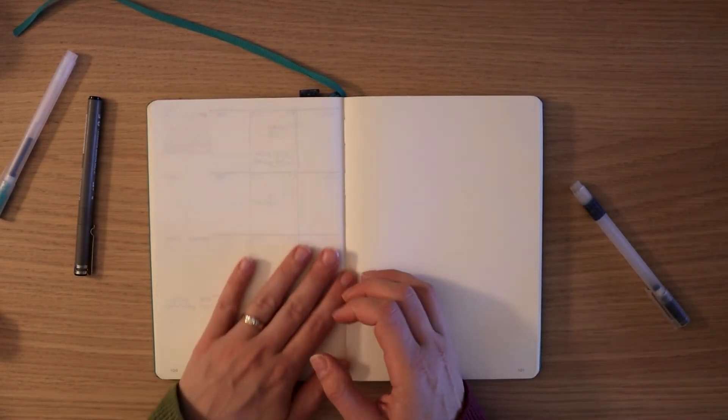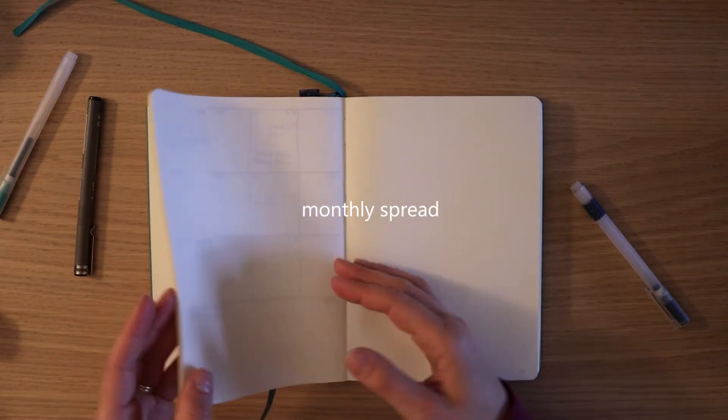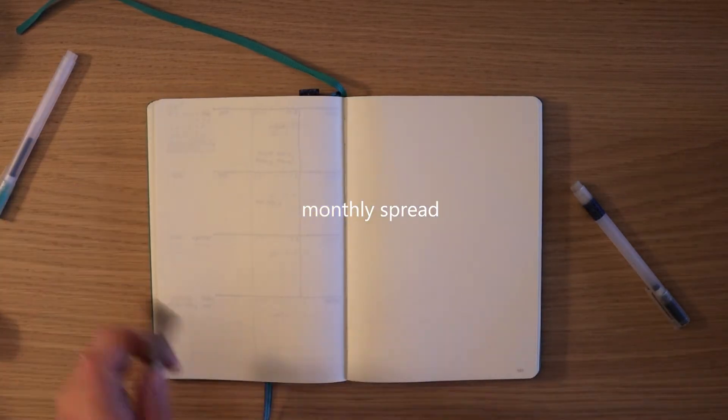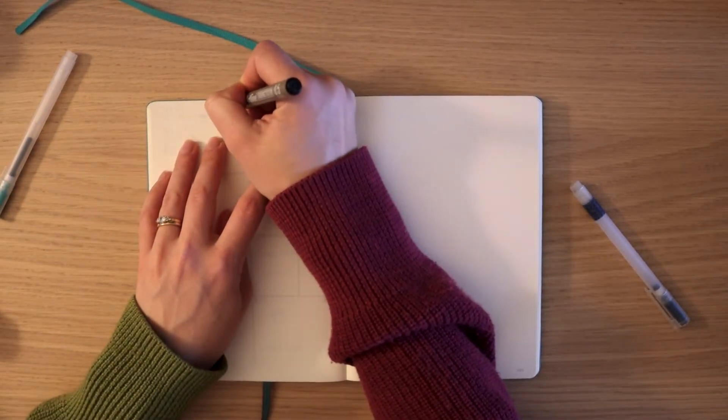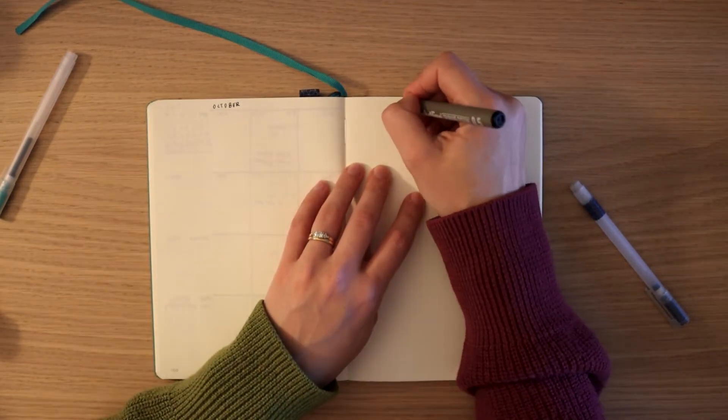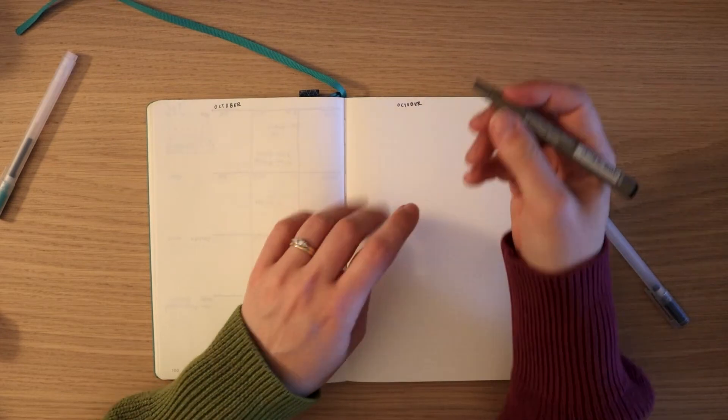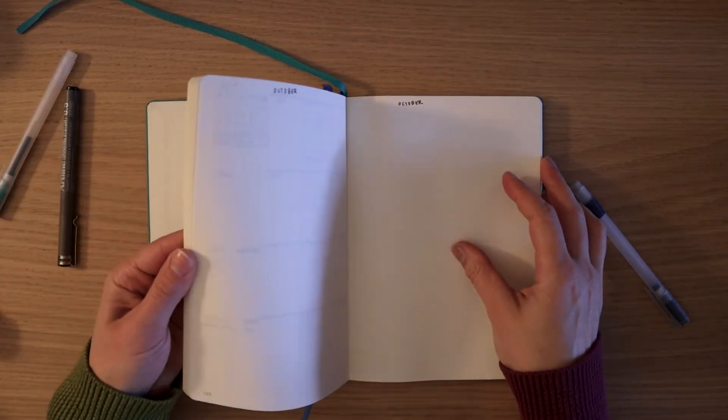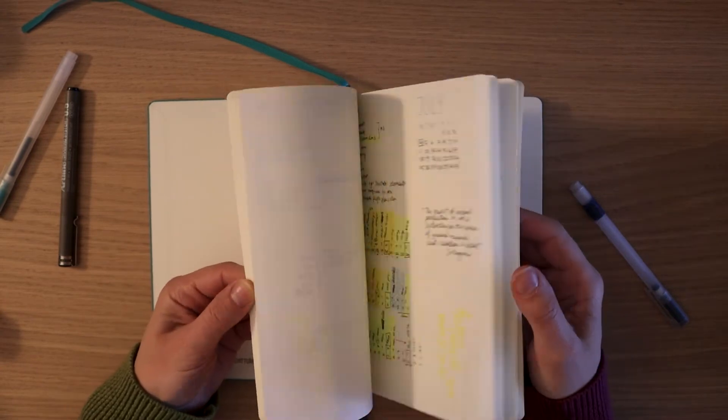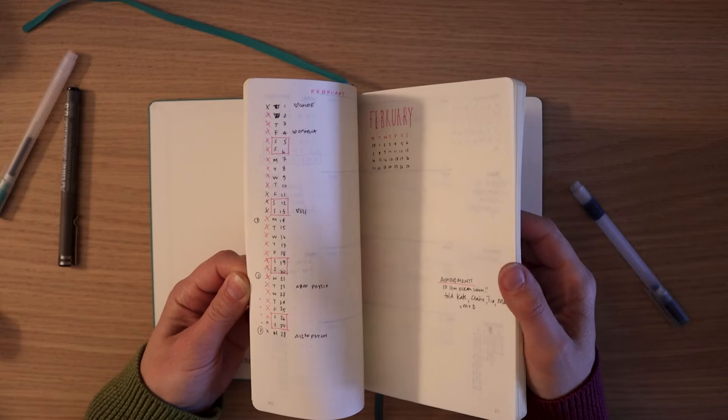So since that was the last week of the month, I then decided I'm just gonna set up the new month for October, which I have also simplified. I used to take like two double spreads for each month, but I realized I wasn't actually using any of the things I was setting up. I used to set up things like goals and tasks to do, but I don't really use that sort of system.